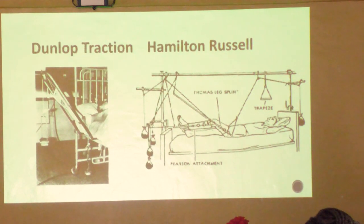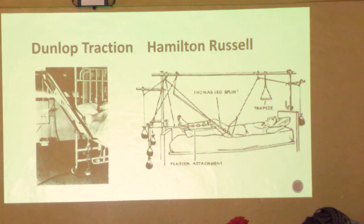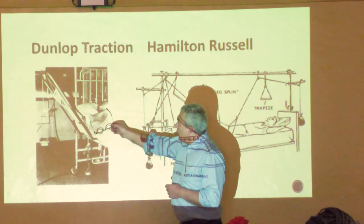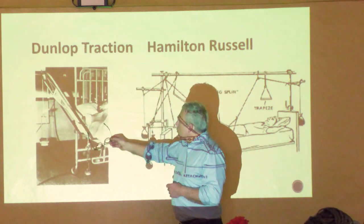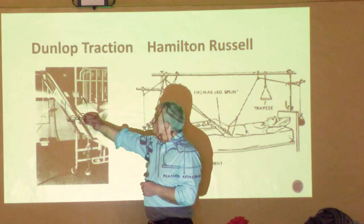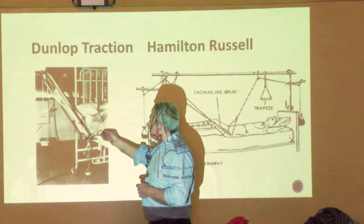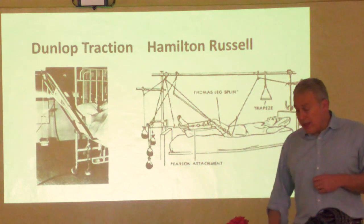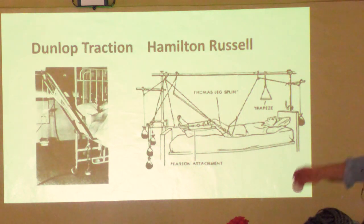In the old days when the early options were only plaster, surgeons worked out ways of treating every type of fracture with traction. For example, on the left there's a child being treated for a supracondylar fracture with Dunlop traction - a weight hanging off the humerus and skin traction with a longitudinal force pulling the supracondylar fracture straight.